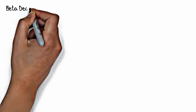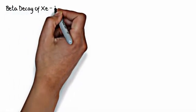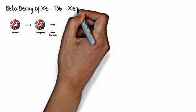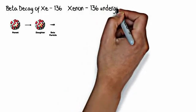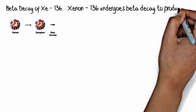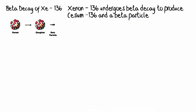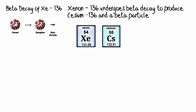Let's look at another one. We got beta decay of xenon-136. When xenon-136 undergoes beta decay, it will produce cesium-136 and a beta particle. Here is the xenon block. Here is the cesium block. We're going to write out 136-54 xenon gives us 136-55 cesium.